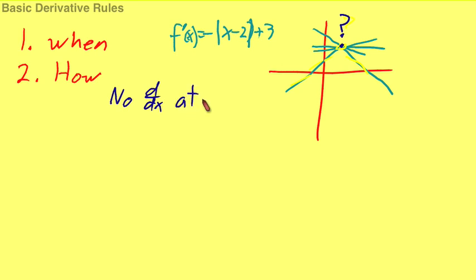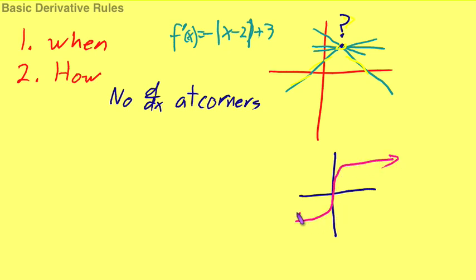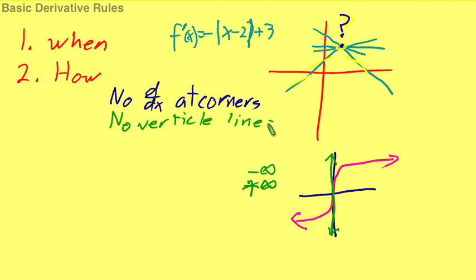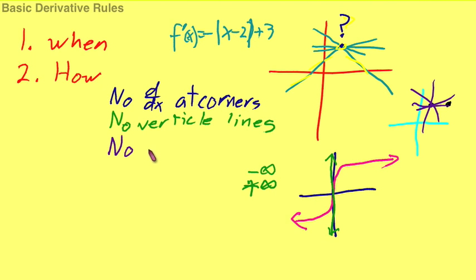There's another time where you can't find the derivative: if you have a vertical line somewhere inside the function, there is no derivative at that point, because you have two potential tangent lines — this could either be negative infinity or positive infinity as the slope. So no vertical lines. Another case: if you have just isolated points, there are no derivatives at points. Anytime you get into a situation where you can have multiple tangent lines, you cannot have a derivative. So those are the three big ones.